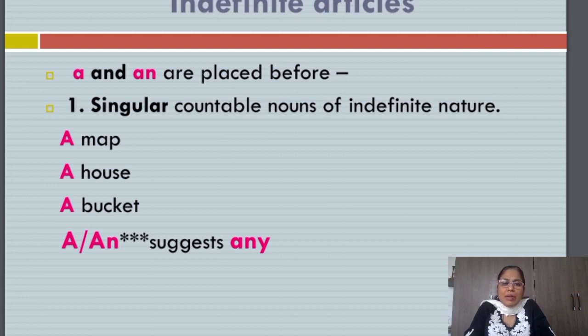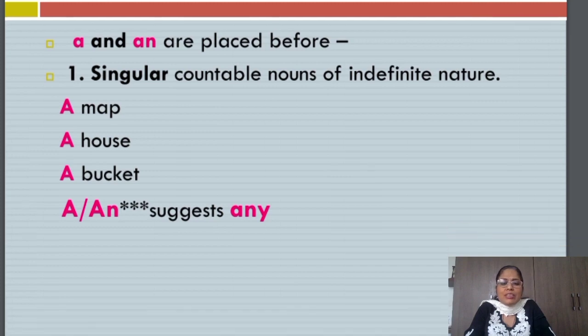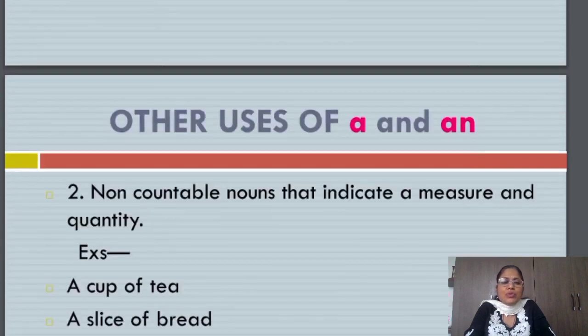A map can mean any map. A house means any house. A bucket - go get a bucket for me - can mean any bucket. So A or AN suggests any.